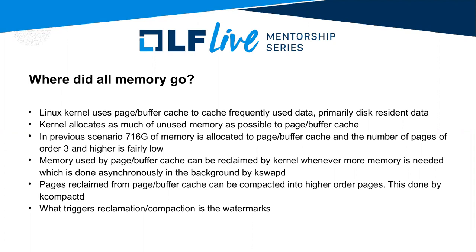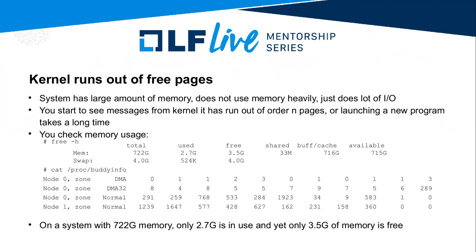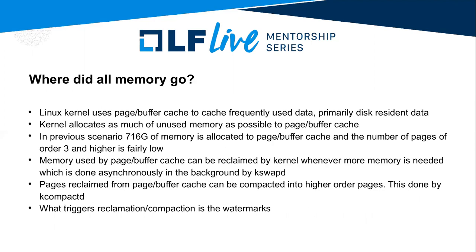If a page is dirty, you can write it back to disk, reclaim that page, and put it back in the free pool. As memory demand increases and the kernel has memory in use for buffer cache, it will keep releasing those pages and putting them back in the free pool so they're available for processes. In the output for `free -h`, buffer cache is using 716 gigabytes of memory — that's where all the memory has gone. We need to reclaim pages from there and make that memory available for user space and other processes.